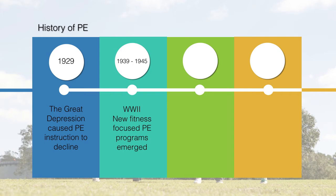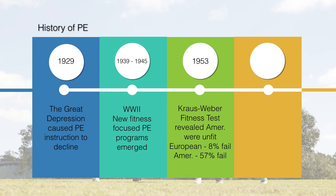After the Depression, fitness tests started to come into play and PE programs began refocusing — to prepare students not only for the draft but for life in general and recreational purposes. The Depression period had also caused a decline in health, so this prompted physical education to come back. Back in the 1940s and 1950s, fitness testing was developed to recognize student weaknesses and strengths and understand how to improve and maintain them.